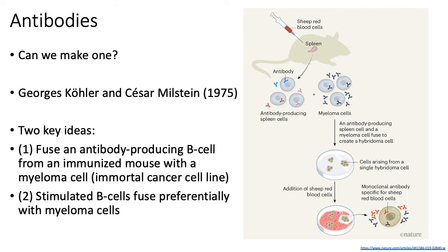It's worth pointing out that nowadays monoclonal antibodies are generally generated by engineering specific producer cell lines with your antibody-encoding genes, which you could have sequenced from your activated B-cells. So they generally don't use this hybridoma technology anymore, but that's how monoclonal antibodies were first developed.